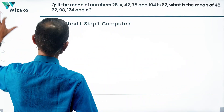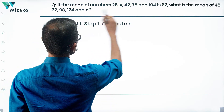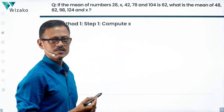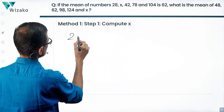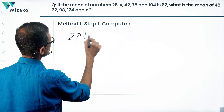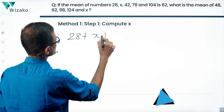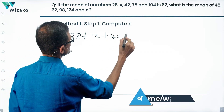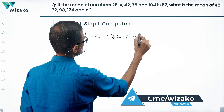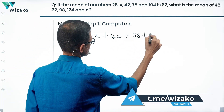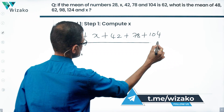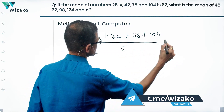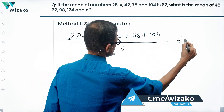Compute the value of x. The average of these five numbers is equal to 62. If I write it: 28 plus x plus 42 plus 78 plus 104, divided by 5, is equal to 62.